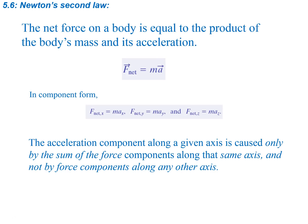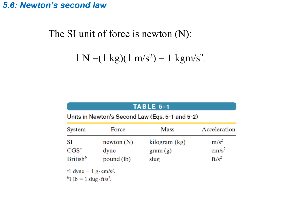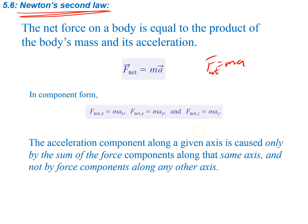Now we come to Newton's second law. The net force on a body equals the product of the body's mass times its acceleration. So Newton's second law is simply F equals ma — force equals mass times acceleration. We can also say net force, or the summation of forces, equals mass times acceleration.